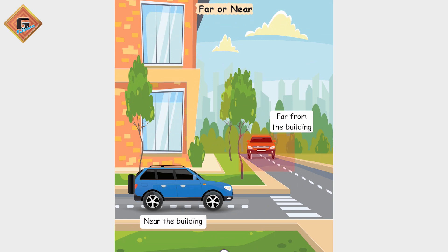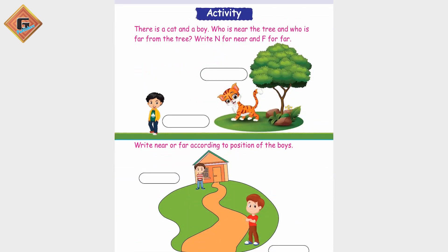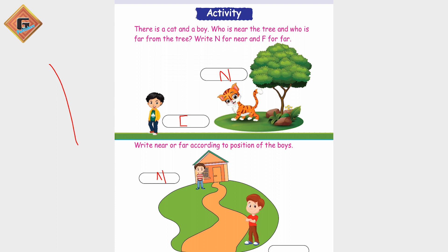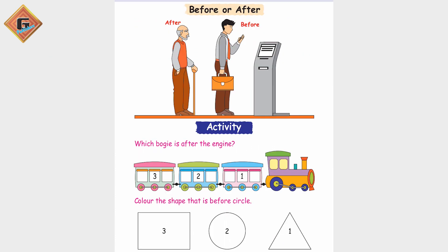This is under and this is over. Far and near — far means distant. You can see this car is far from the building and this car is near the building. This cat is near — so we write N for near.